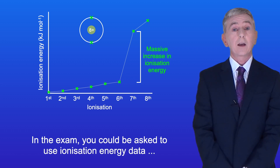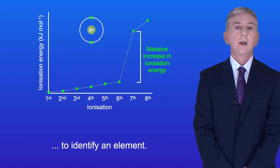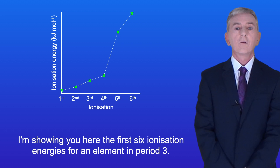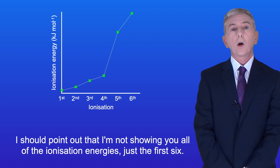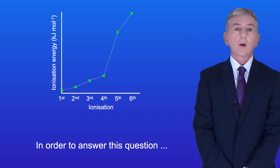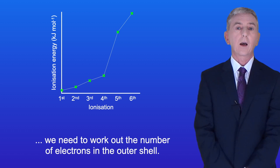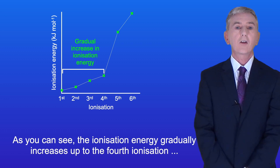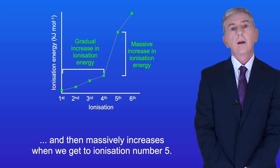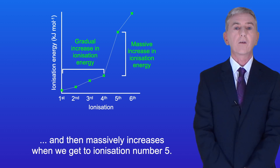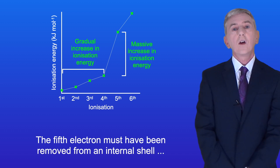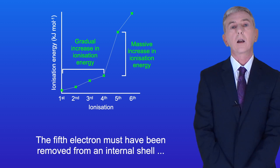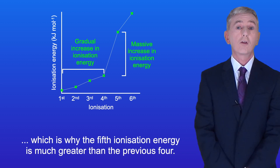In the exam you could be asked to use ionization energy data to identify an element. I'm showing you here the first six ionization energies for an element in period 3, and we're going to work out which element is shown. In order to answer this question, we need to work out the number of electrons in the outer shell. The ionization energy gradually increases up to the fourth ionization, and then massively increases when we get to ionization number five. This tells us that this element has four electrons in its outer shell — the fifth electron must have been removed from an internal shell, which is why the fifth ionization energy is much greater than the previous four.